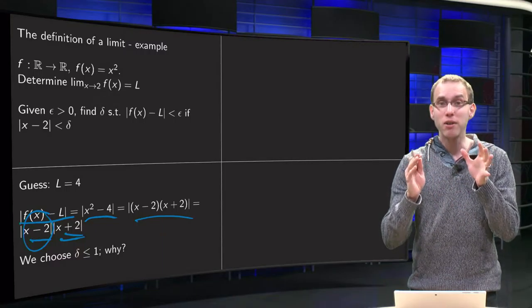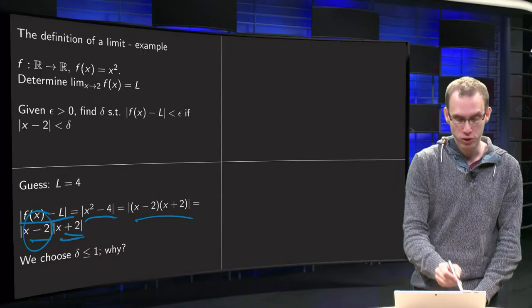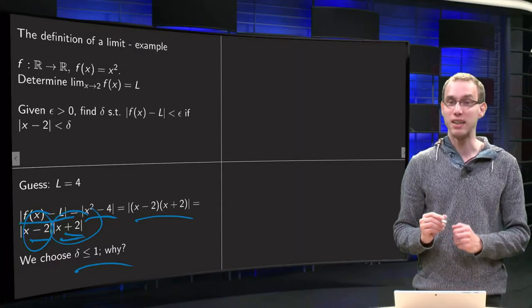First of all, I say, well, we choose our delta at most equal to 1. That's the first condition. And why is that? That's in order to take care of this second factor here.